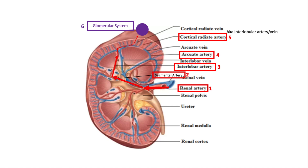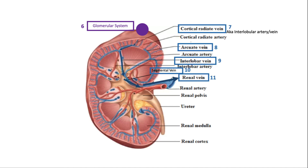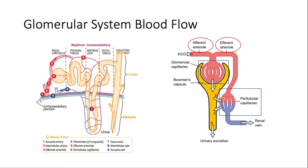Additionally, there's the cortical radiate artery, also called the interlobular artery. From there, that flow is just reaching the glomerular system. We'll talk about glomerular blood flow itself in a moment because it's very unique. The venous return follows the exact same path as the arterial system. Glomerular blood flow is one of the three portal systems in the body, and what makes it unique is that it has two arterioles controlling flow into the first glomerular capillary. Blood then continues down the rest of the nephron, and the peritubular capillaries return blood to the heart through the renal vein.